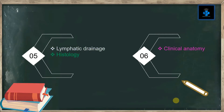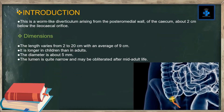Finally, we are also going to discuss some important clinical anatomy related to it. The appendix is a worm-like diverticulum arising from the posteromedial wall of the cecum, about two centimeters below the ileocecal orifice.